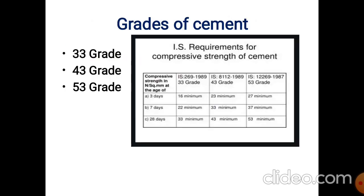These are the grades of cement. We test the 1:3 ratio — 1 cement to 3 fine aggregates. We use the cube cast at 28 days. The cement grades are 33 grade, 43 grade, and 53 grade. We normally use 53 grade cement, sold in bags.